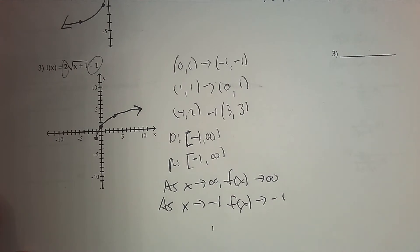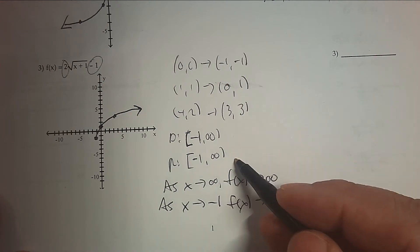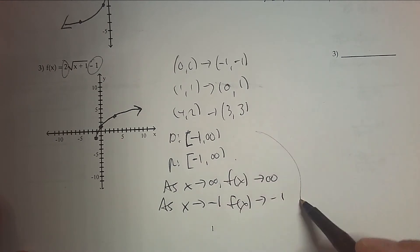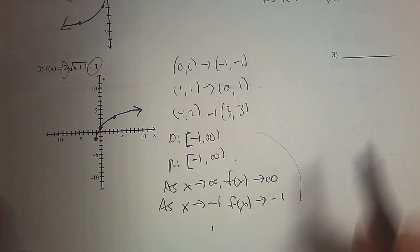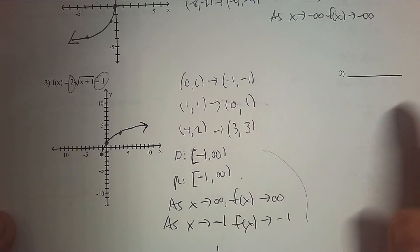The domain is your h, so it's −1 to infinity. Your range is your k, which is also −1 to infinity. And your end behavior: as x approaches infinity, f(x) approaches infinity. And the other is your h and k, so as x approaches −1, f(x) approaches −1.